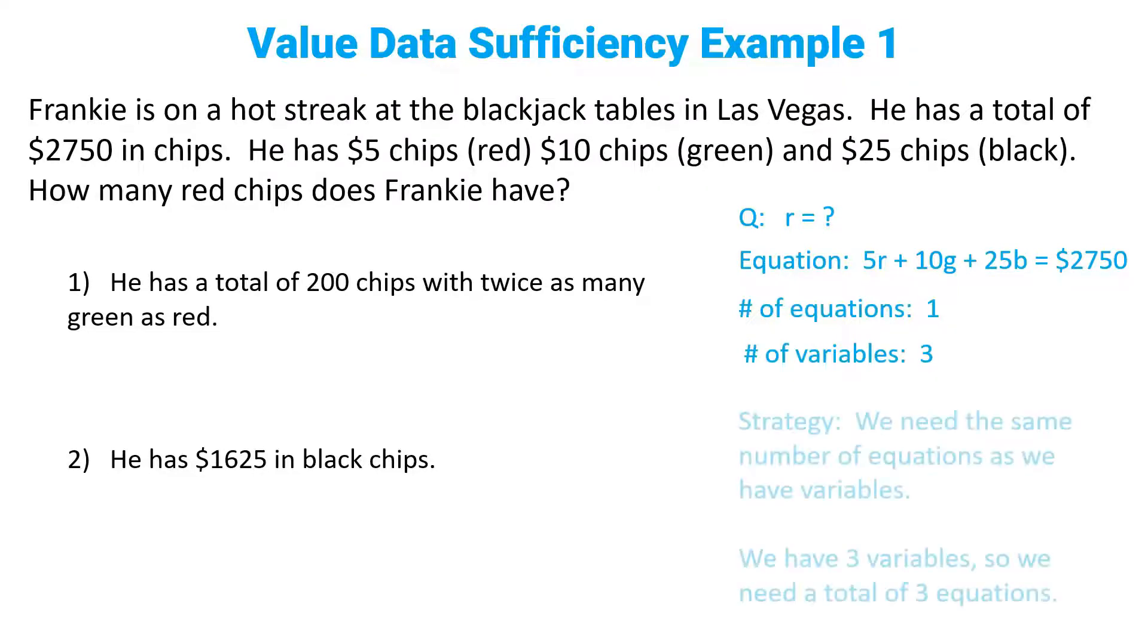So here's the strategy. We need the same number of equations as we have variables in order to calculate an exact value for r. So we have three variables, so we need a total of three equations. Now, we've already been given one equation in the question stem, so we need two more equations. Let's see if either one of these statements gives us two more equations.